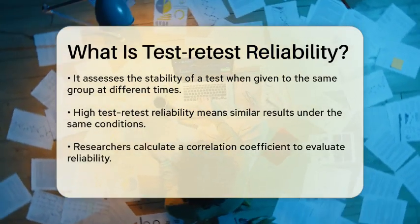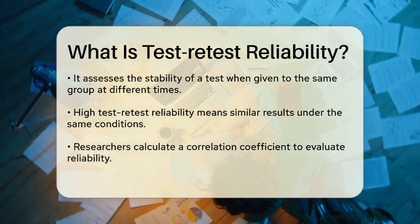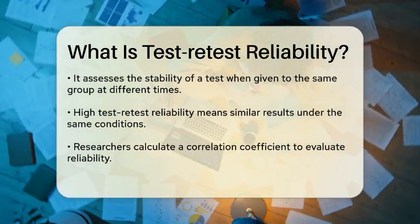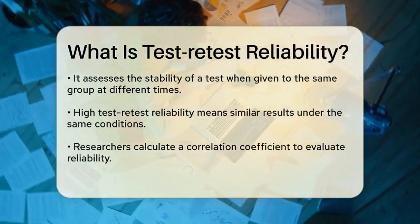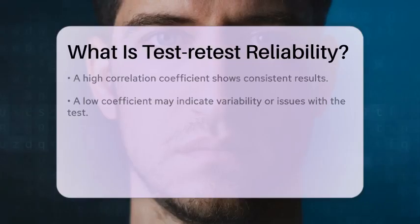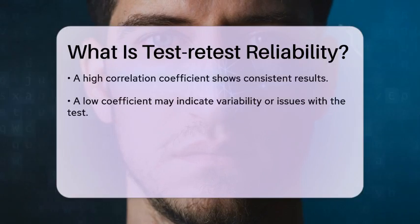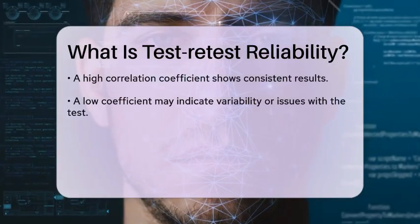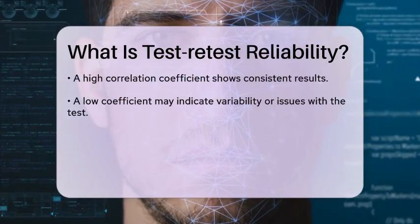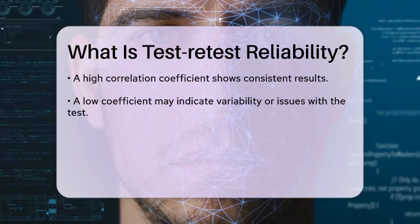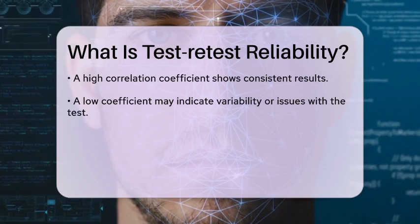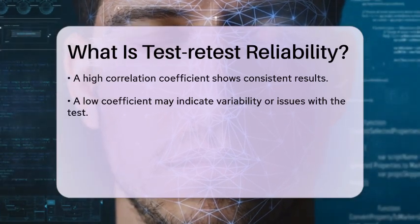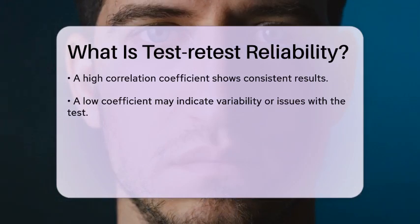To measure this reliability, researchers typically calculate a correlation coefficient between the two sets of scores. A high correlation coefficient indicates that the test produces consistent results, while a low coefficient suggests variability in the scores, which may indicate issues with the test itself or changes in the individuals being tested.